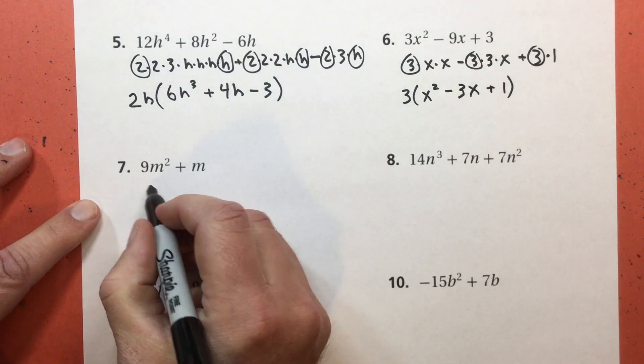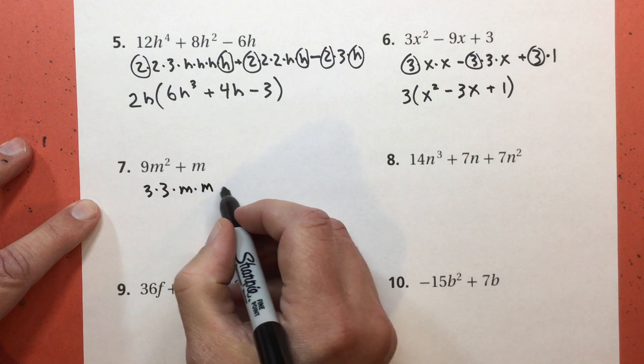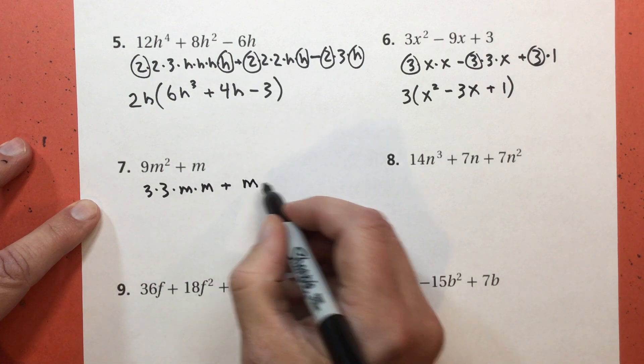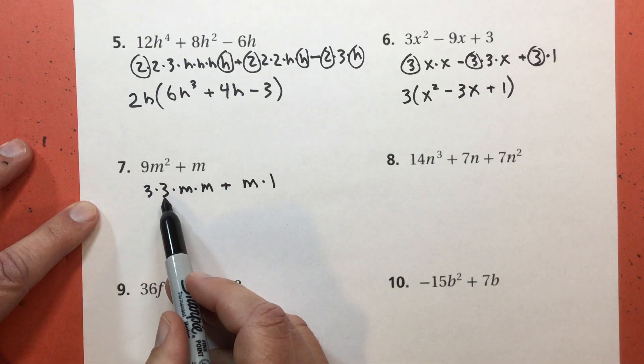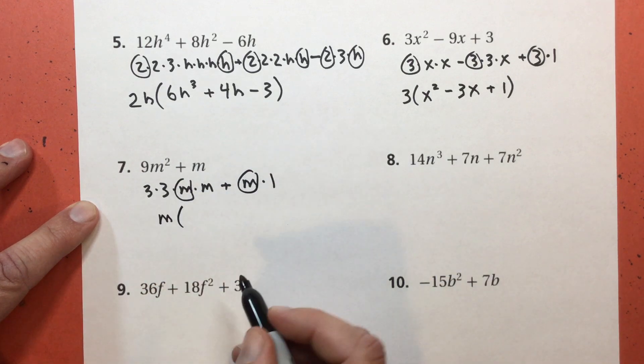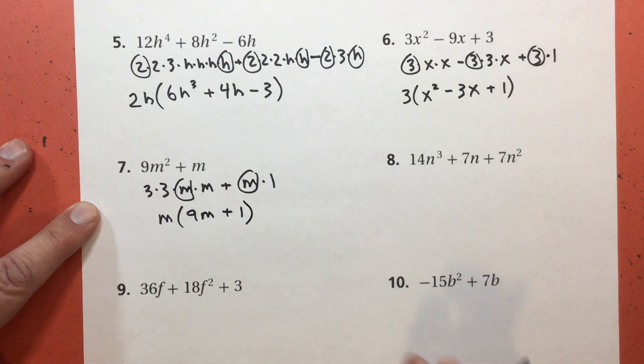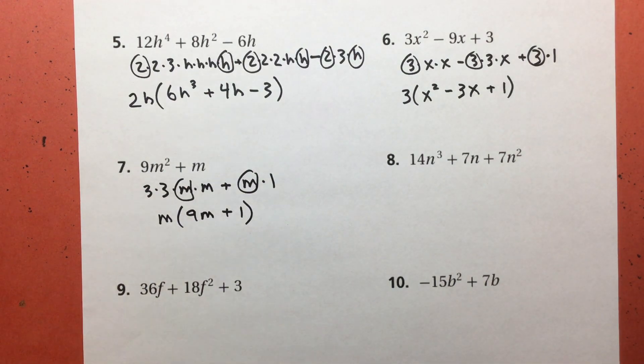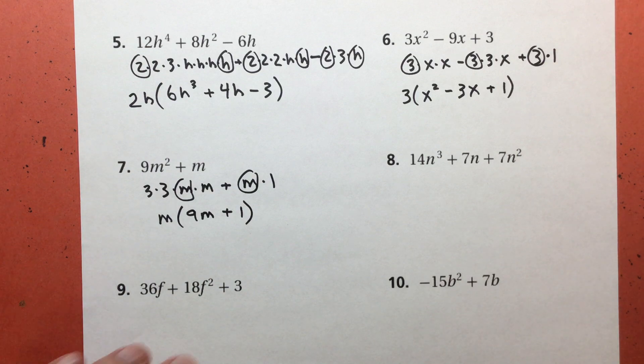We'll see that with this one. 9 is 3 times 3. And M squared is M times M. And of course, M is M times 1. What do these all have in common? Here's 3s, but there's no 3s over here. Here's an M. Here's an M. So my common factor is M times 9M plus 1. And you know what? I'm not a big fan of just using random letters for other stuff. Usually the letters stand for things. I just want to throw that out there. Like H could stand for height, which in that case, that's fine. All right.